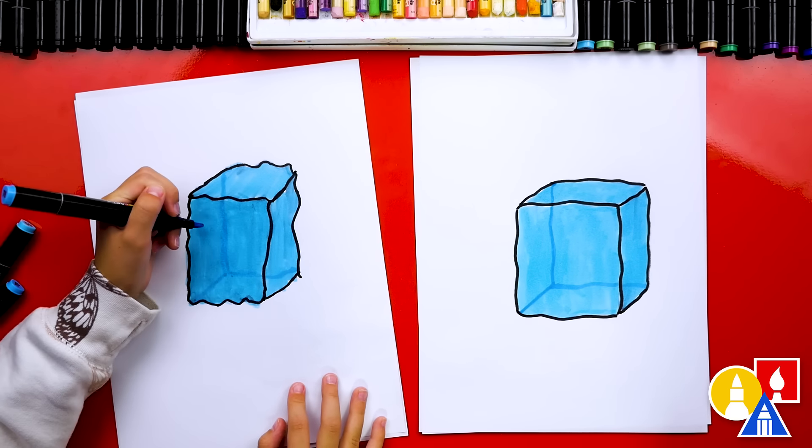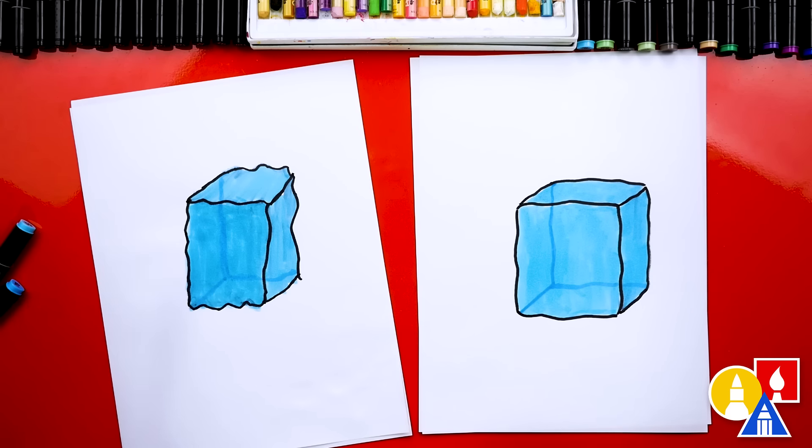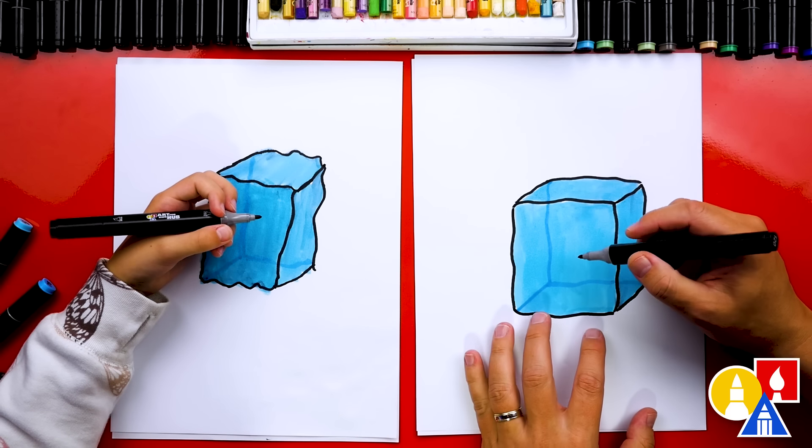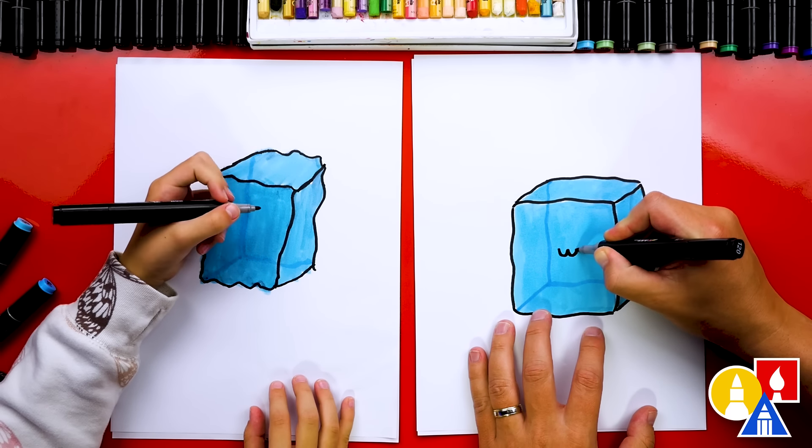Now what's our ice cube missing? A funny face. Yeah. Let's switch to our black marker and we're going to add our funny face. You can change your funny face. It doesn't have to look like ours. I'm going to draw a little w in the middle.